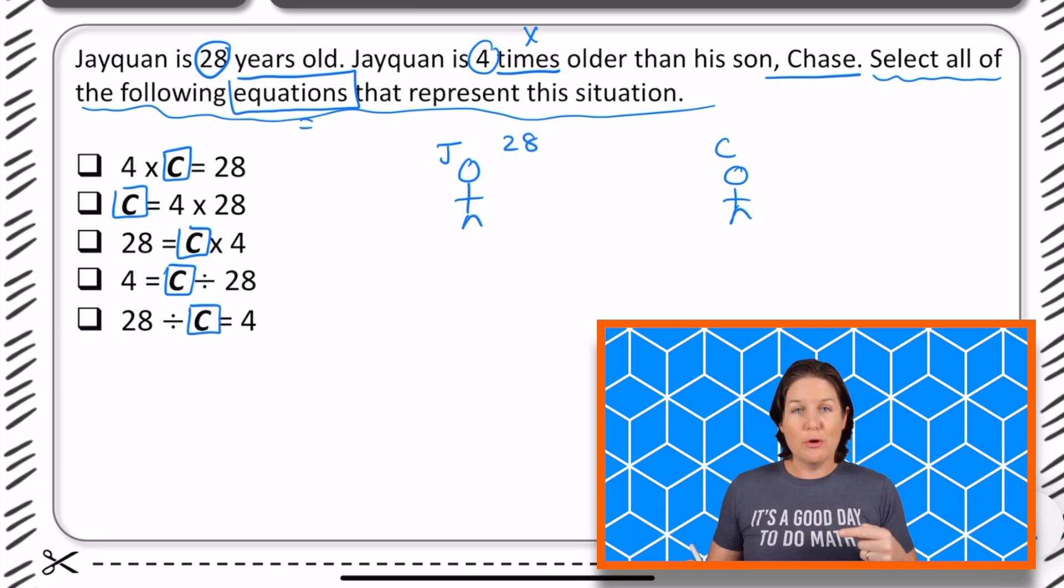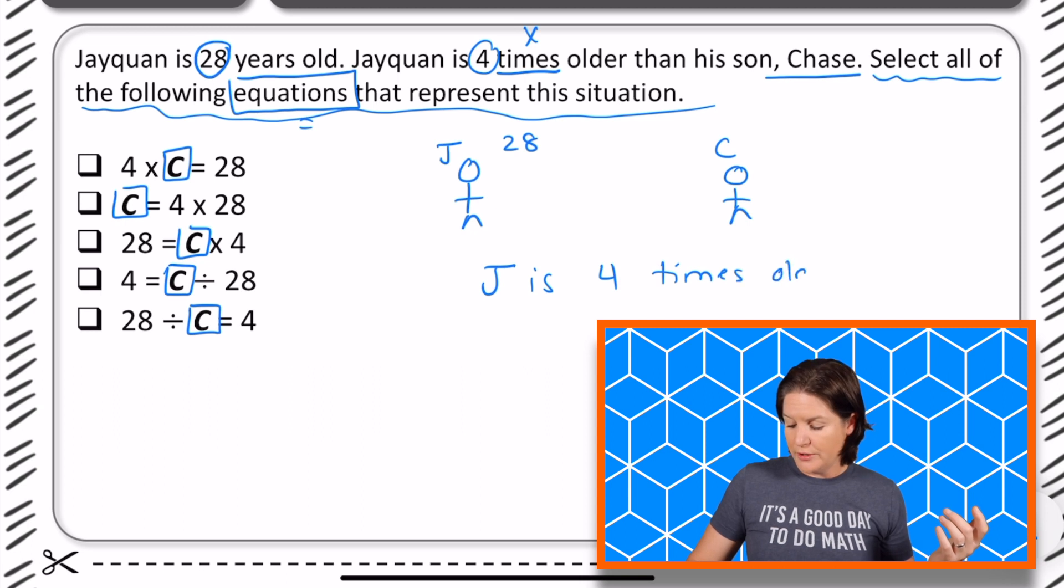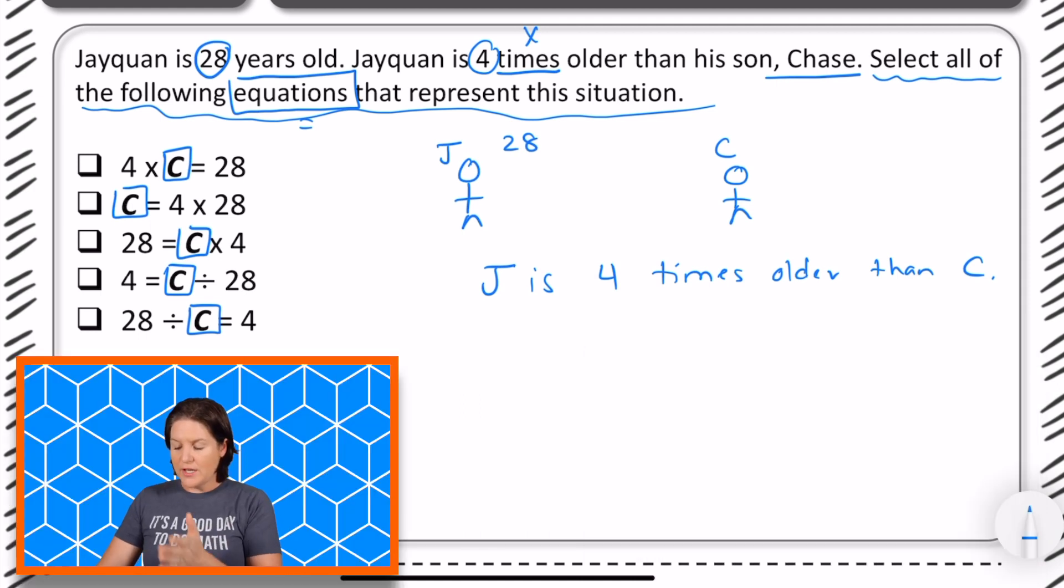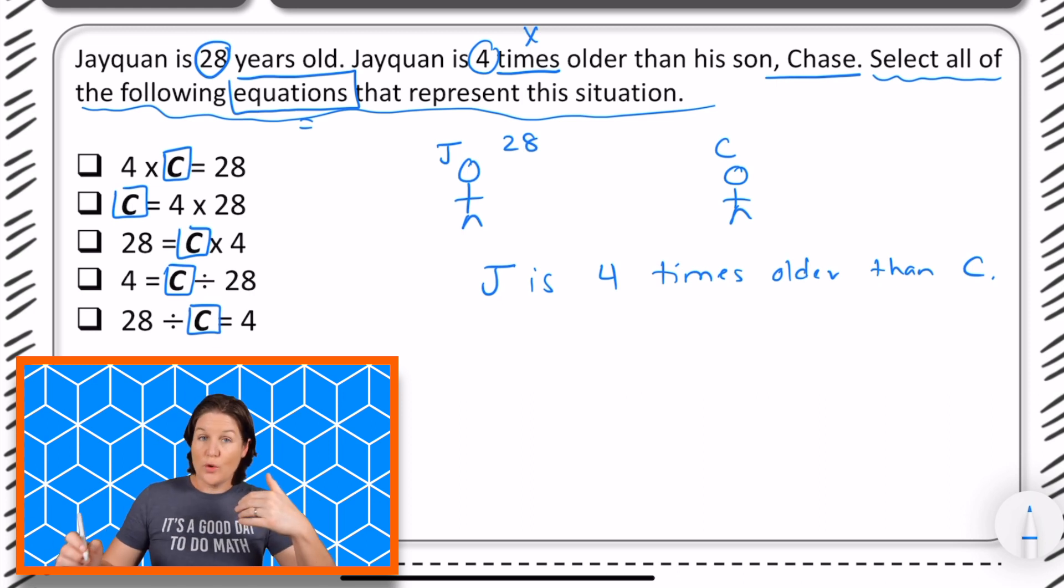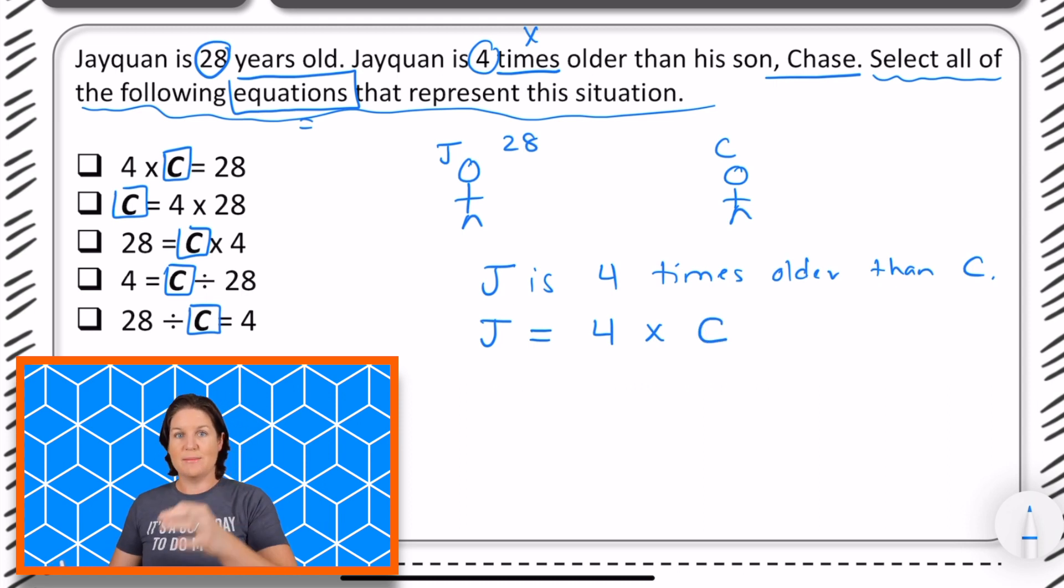We do know though that Jaquan is four times older than Chase. So if I were to think about that, I would say that Jaquan is four times older than Chase. To write this in an equation would be that Jaquan equals four times older than Chase. Jaquan is four times the amount that Chase is. Now, while we don't know how old Chase is, we do know how old Jaquan is. How old is Jaquan?